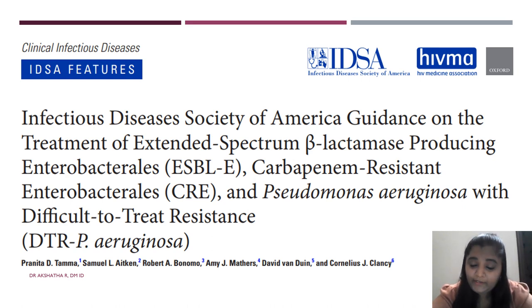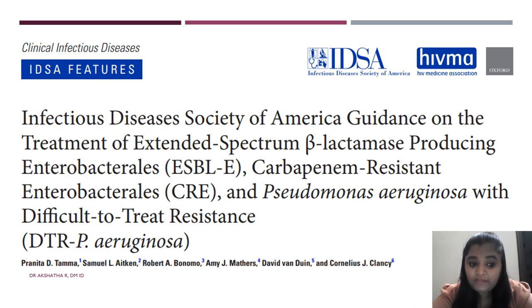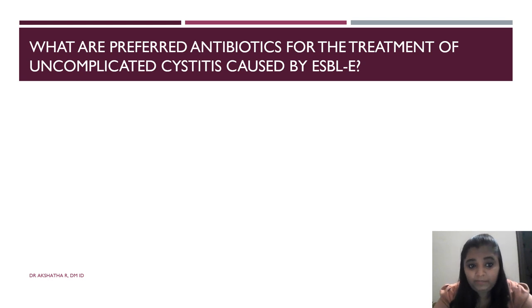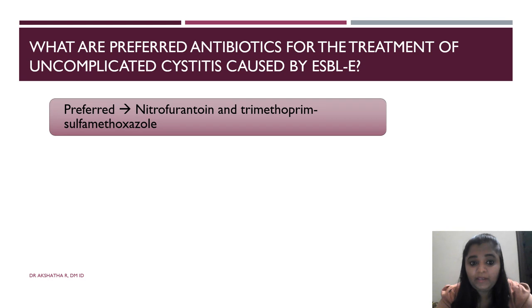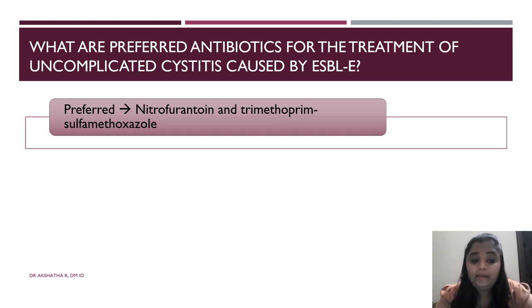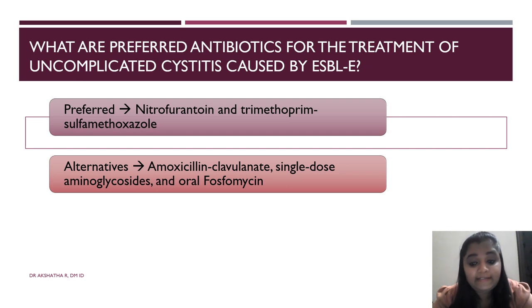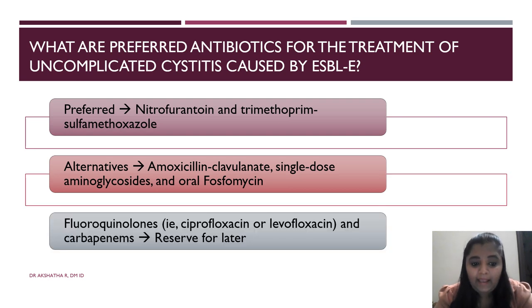This is the IDSA AMR Guidance — note it is a guidance, not a guideline — for treatment of ESBL-producing Enterobacteriaceae, carbapenem-resistant Enterobacteriaceae, and difficult-to-treat resistant Pseudomonas aeruginosa. For uncomplicated cystitis caused by ESBL-E, the preferred treatment is nitrofurantoin or cotrimoxazole. Alternatively, you can use amoxicillin-clavulanate, single-dose aminoglycoside, or oral fosfomycin. Fluoroquinolones and carbapenems, though obviously sensitive, should be reserved for later use.